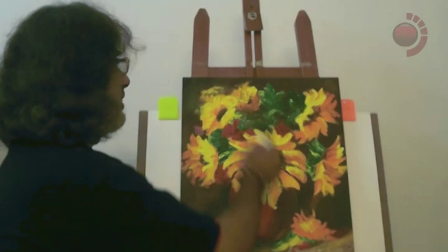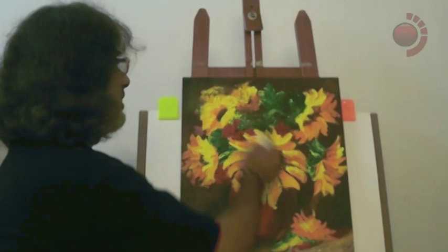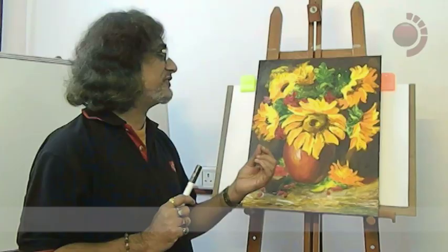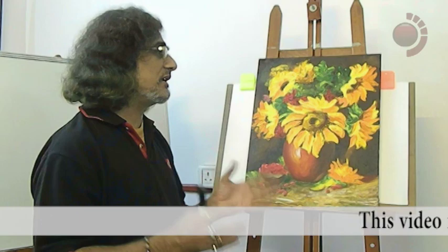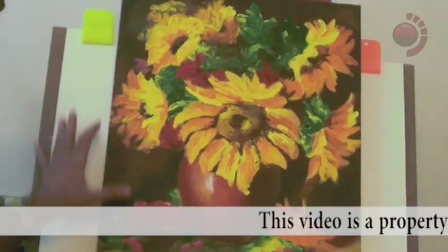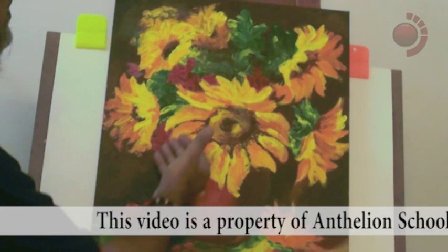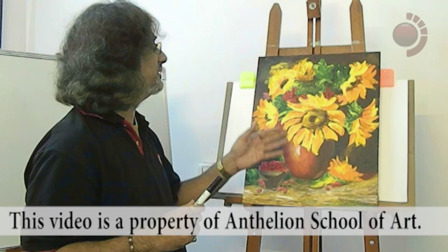Let us go to a particular painting where we will define this form called texture. On this particular space we have a still life. Still life is when some objects have been placed and drawn — it can be imaginary. This is a flower pot with lots of flowers, some flowers falling down, some in the pots. See the particular texture on these flowers.